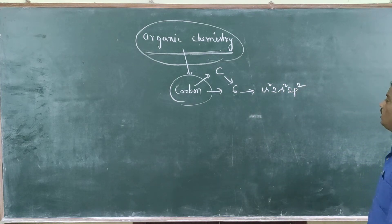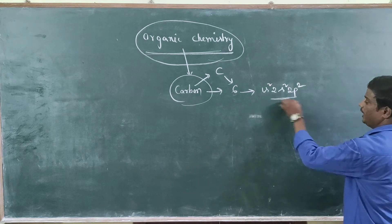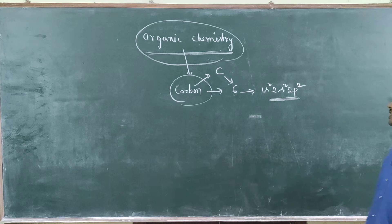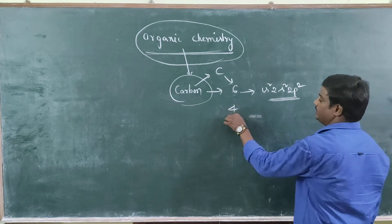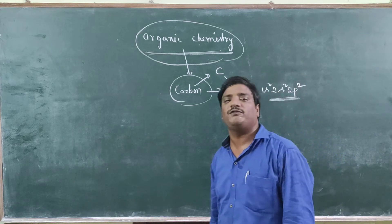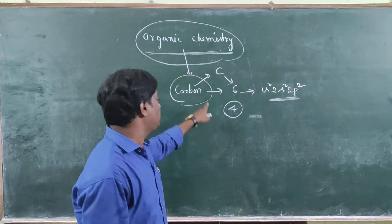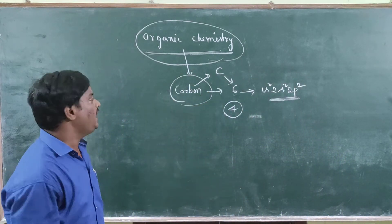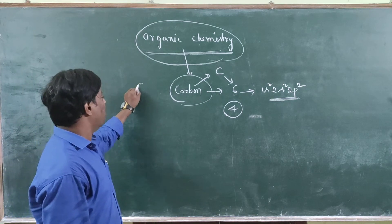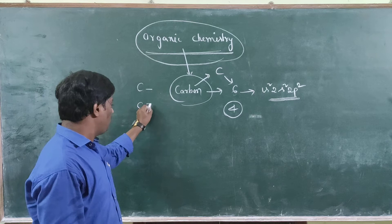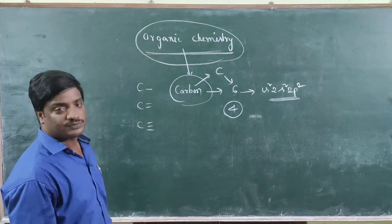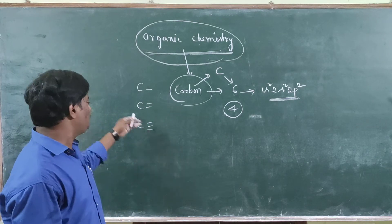The outermost shell configuration gives carbon a valency of 4. This is an extra feature of carbon — it can form single bonds, double bonds, triple bonds, and two double bonds.